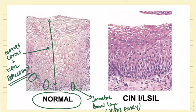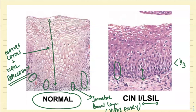So this is your normal. Now, in the case of the first precursor lesion we call L-CIL, there is dysplasia — cells arranged in a disordered fashion, becoming hyperchromatic. But they are limited to the lower one-third of the epithelium. Less than one-third of the epithelium is involved by dysplasia.